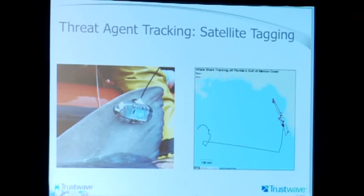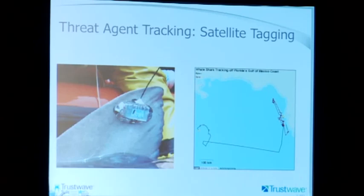What I thought was missing from tracking attackers is being able to do satellite tracking. You see it on Shark Week — they tag the shark, send it out, then monitor it. Imagine this in a web security perspective: if you can tag the attacker, instead of the Gulf of Mexico, that map on the right is a visualization of your website and where they're going and what they're doing. That would be really cool to have — and we don't have that today.